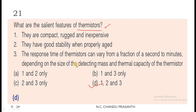Question 21: What are the salient features of thermistors? Thermistors, thermocouples — all these are temperature transducers. The options are: they are compact, rugged and inexpensive; they have good stability when properly aged; and the response time of thermistors can vary from a fraction of a second to minutes depending on the size of the detecting mass and thermal capacity of the thermistor. The correct option is D — that is 1, 2 and 3. All these are the salient features of thermistors.